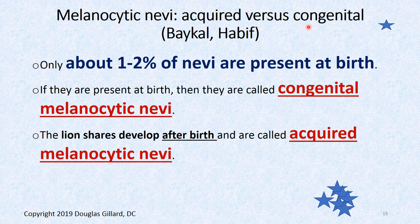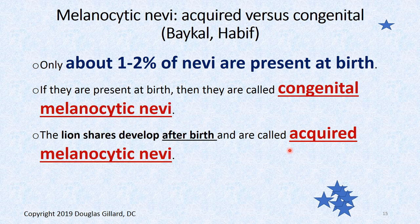So there are congenital melanocytic nevi and acquired. About 1-2% of people are born with moles. One of my granddaughters has one on her hand. If you're born with them, they're considered congenital melanocytic nevi. But the lion's share develop after birth, especially when you start reaching adolescence, and they can pop up any time after birth. If they're not there at birth and they pop up later, they're acquired. We'll look mostly at acquired ones.